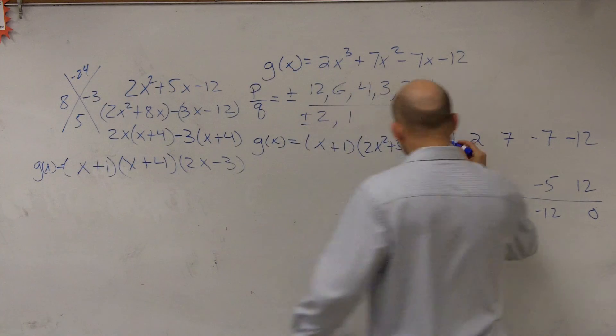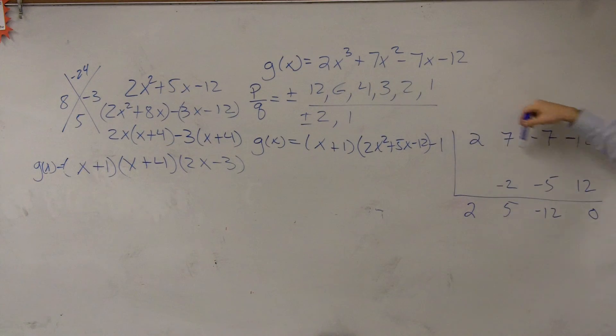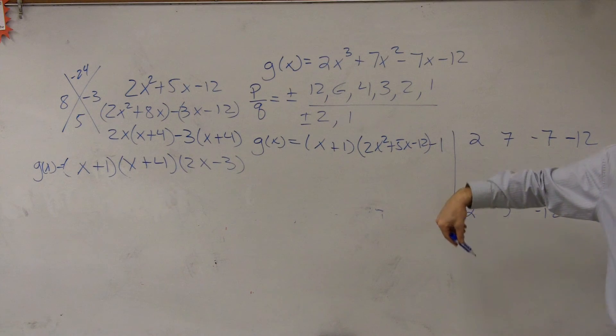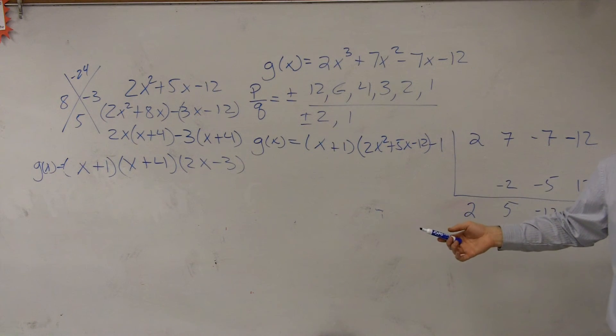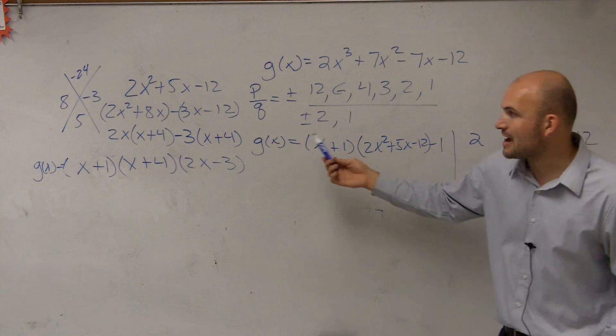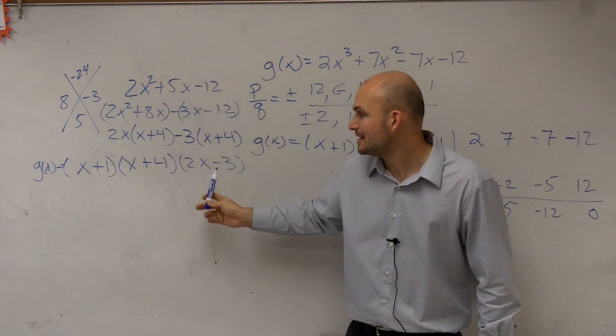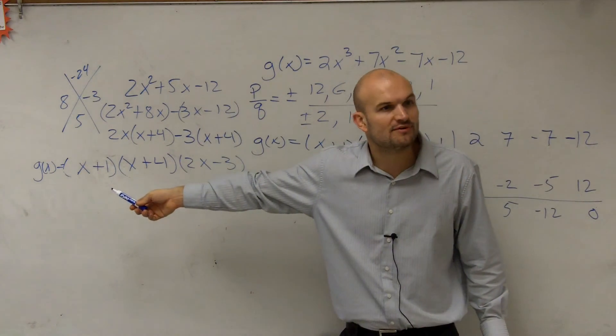So do you guys see what I did? I found 1 rational zero, which was negative 1. I factored it to get to this. If you couldn't factor it, you'd have to use the quadratic formula like we did in the last problem. I can factor it. So I factored it down to this. Now that we have all the factors, can we find all the zeros? Yes.